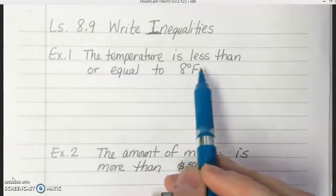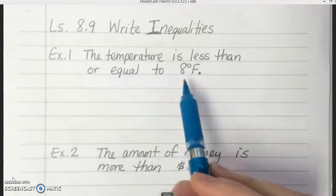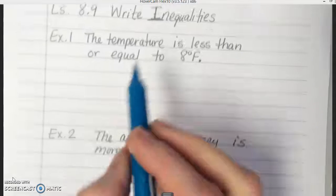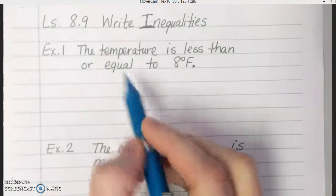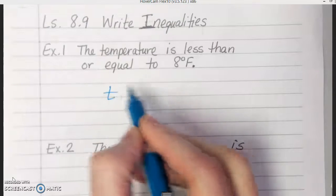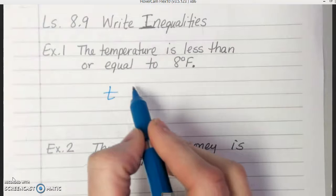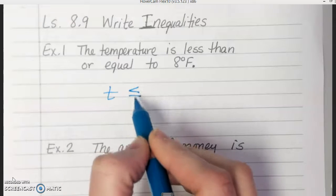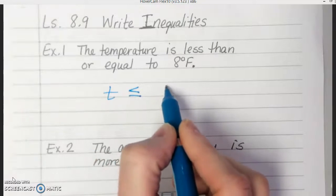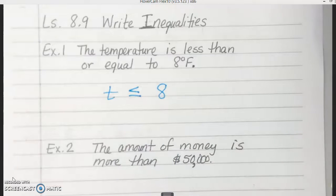So example one, the temperature is less than or equal to 8 degrees Fahrenheit. So to write that as an inequality, let's use T for temperature, is less than or equal, so we use the less than or equal symbol, to 8 degrees Fahrenheit. So all we'd write there is T is less than or equal to 8 like that.